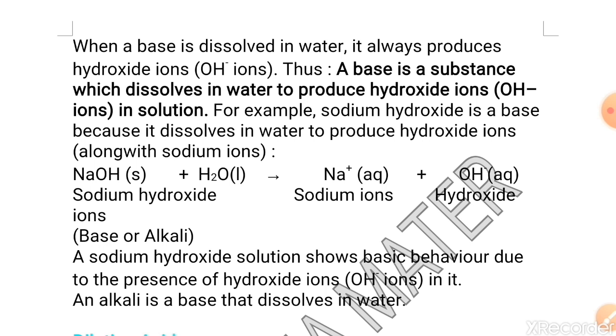So, this is also Arrhenius concept for a base. A base is that chemical substance, which on dissolving in water, releases hydroxide ions. So, we have understood this Arrhenius concept of an acid and a base.